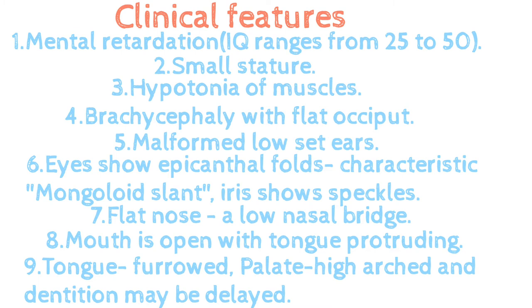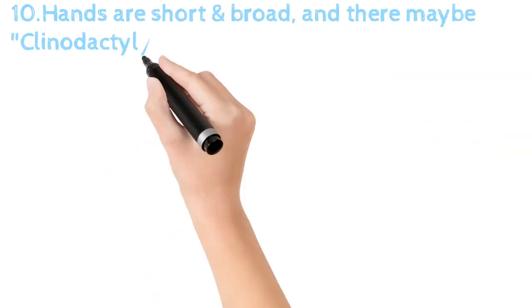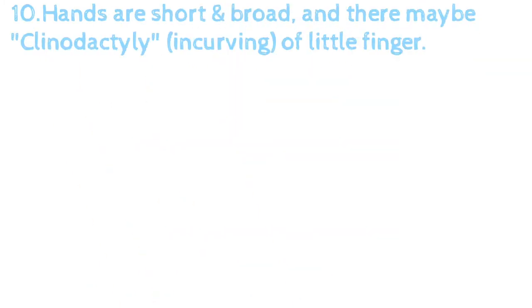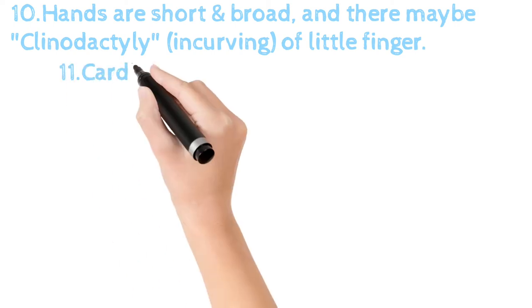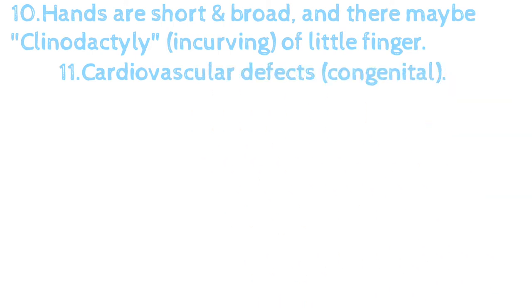The palate is high-arched and dentition may be delayed. Hands are short and broad. There may be clinodactyly — inward curling of the little finger. There may also be congenital cardiovascular defects.